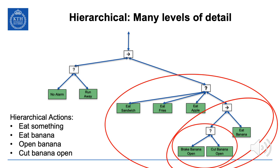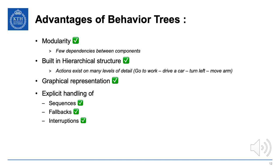In this example we have hierarchical actions — eat something, eat a banana, open a banana, cut banana open — each including the others in a hierarchy. Looking back at the claimed advantages: we have seen modularity with few dependencies, making it easy to add eating fries, new ways of opening a banana, and the interruptive safety behavior without changing other parts. We've also seen hierarchical structure, the graphical representation, and explicit handling of sequences, fallbacks, and interruptions.